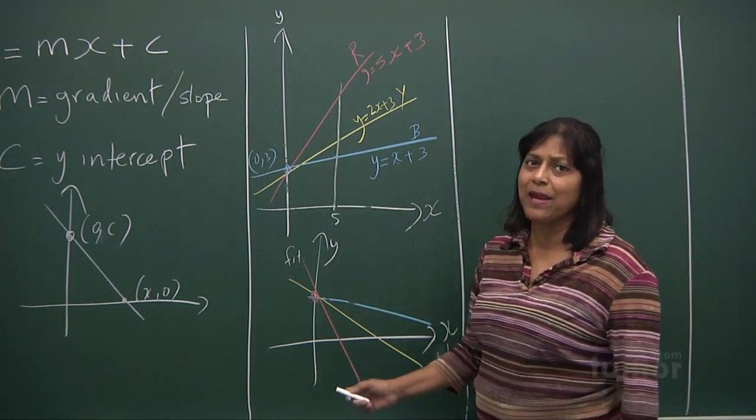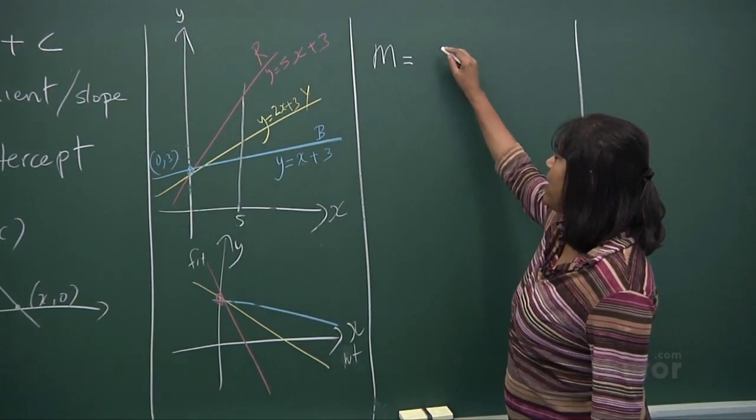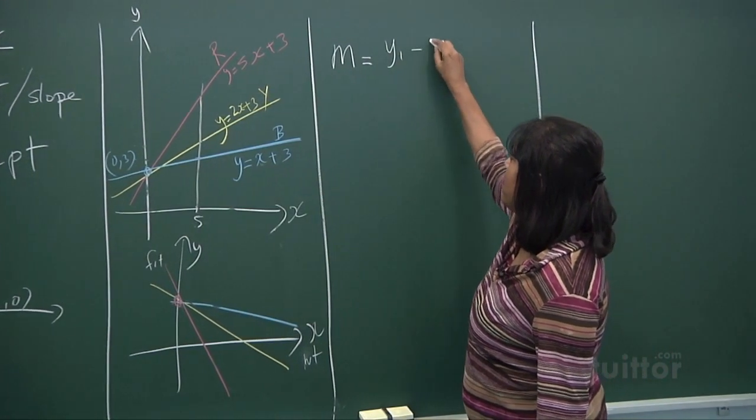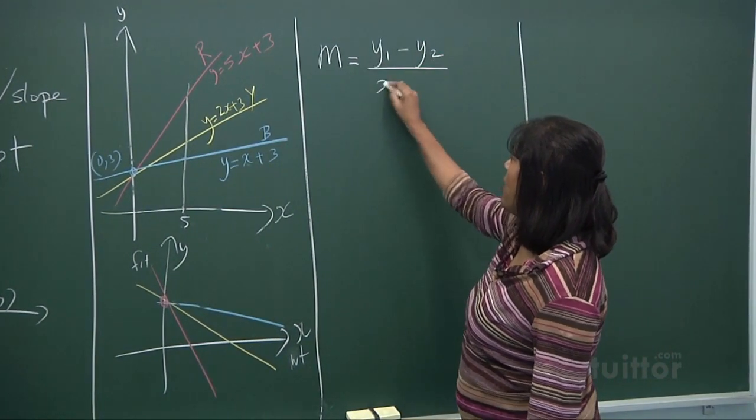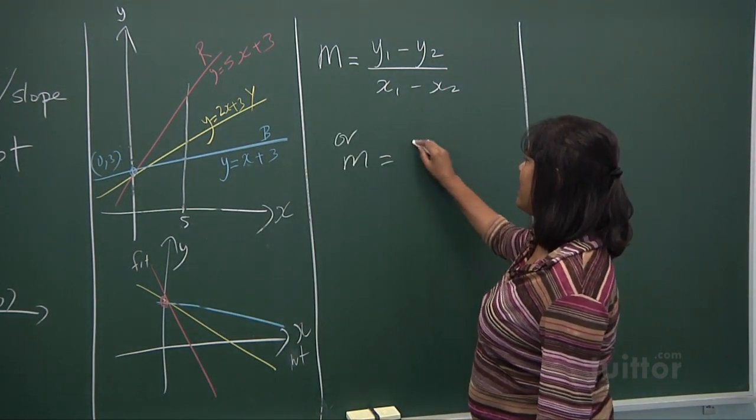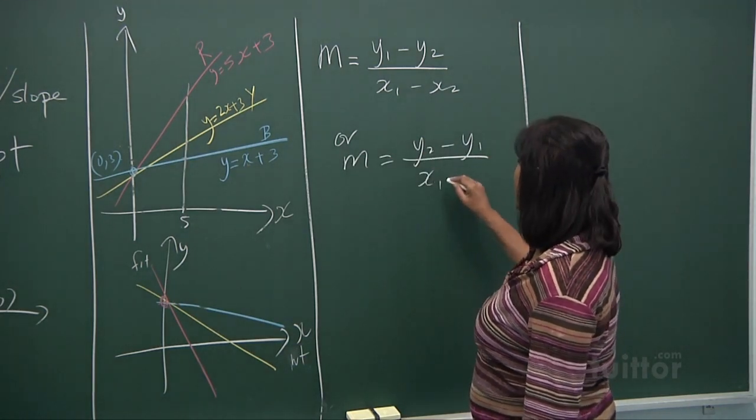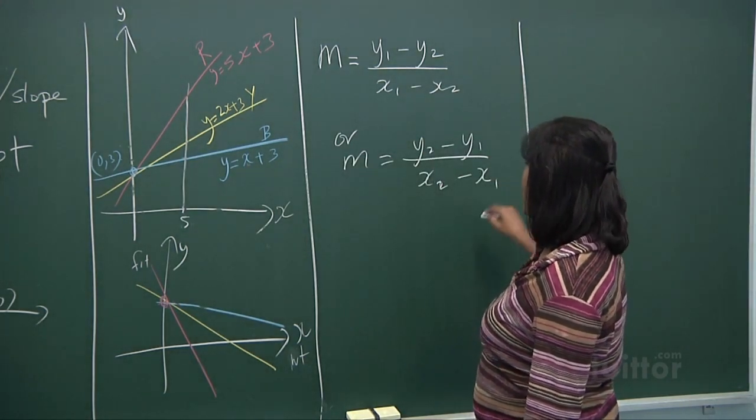Now, how do we get the gradient? The gradient m is given by the equation: y₁ - y₂ over x₁ - x₂. Let me explain what is y₁, y₂, and all these things.